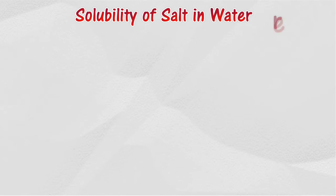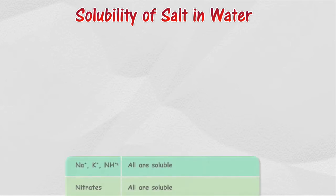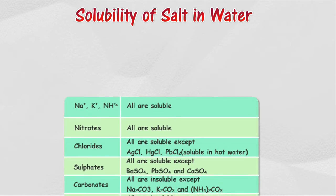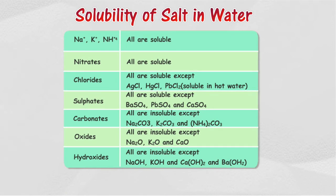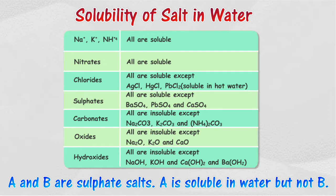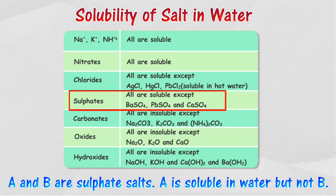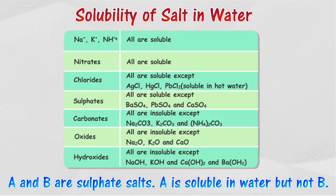Solubility in water enables inferences to be formed on the type of cation and anion that may be present in the salt. The following table summarizes the solubility of different types of salt. Sometimes solubility tests can be used to determine the type of possible salts present. For example, A and B are sulfate salts; however, A is soluble in water and B is not. Thus, B might be barium sulfate, lead(II) sulfate, or calcium sulfate.